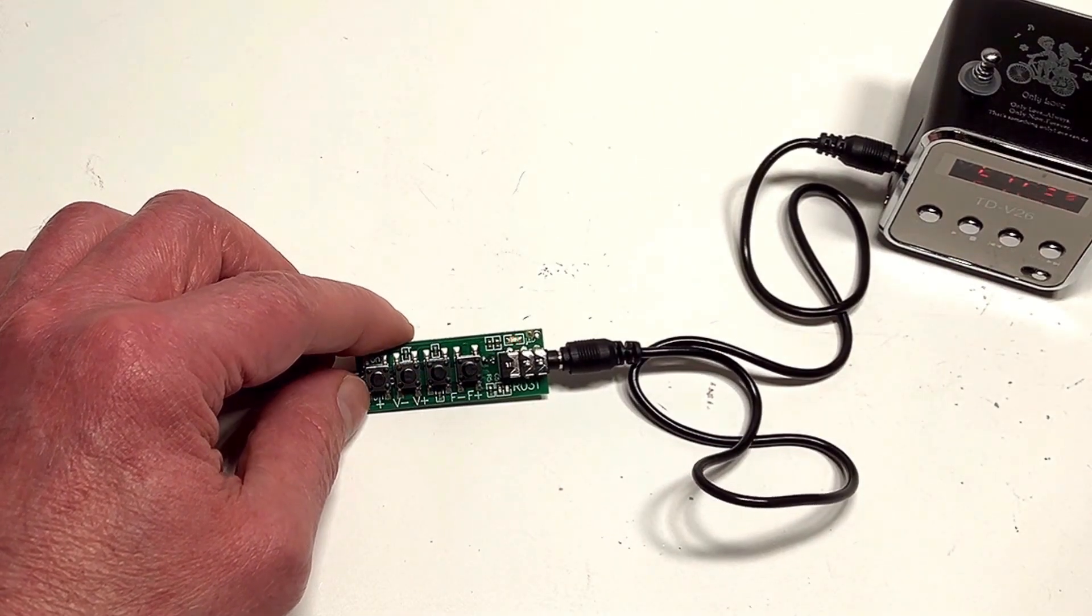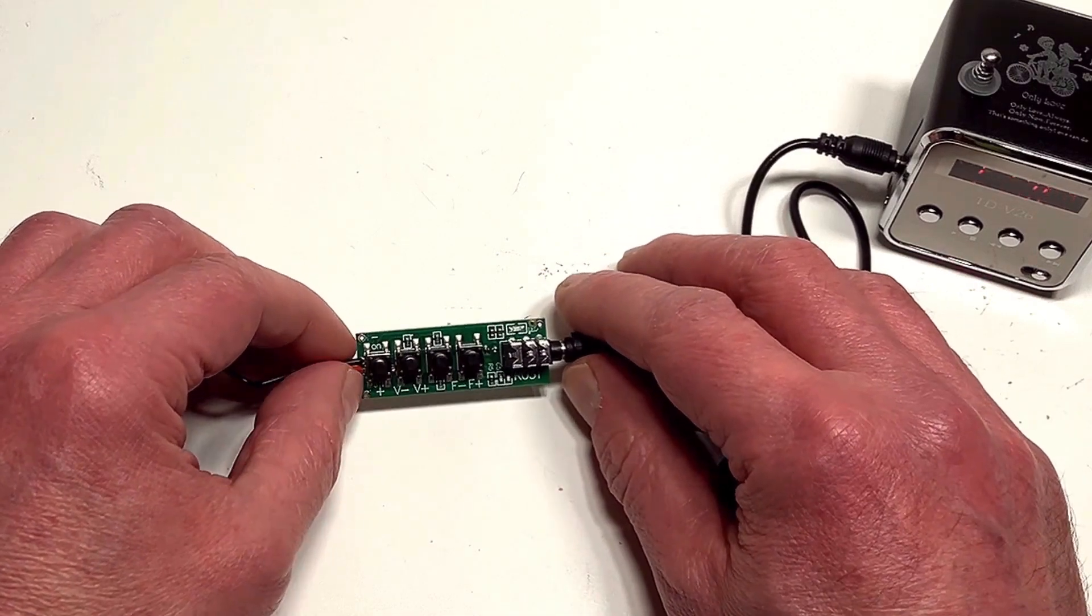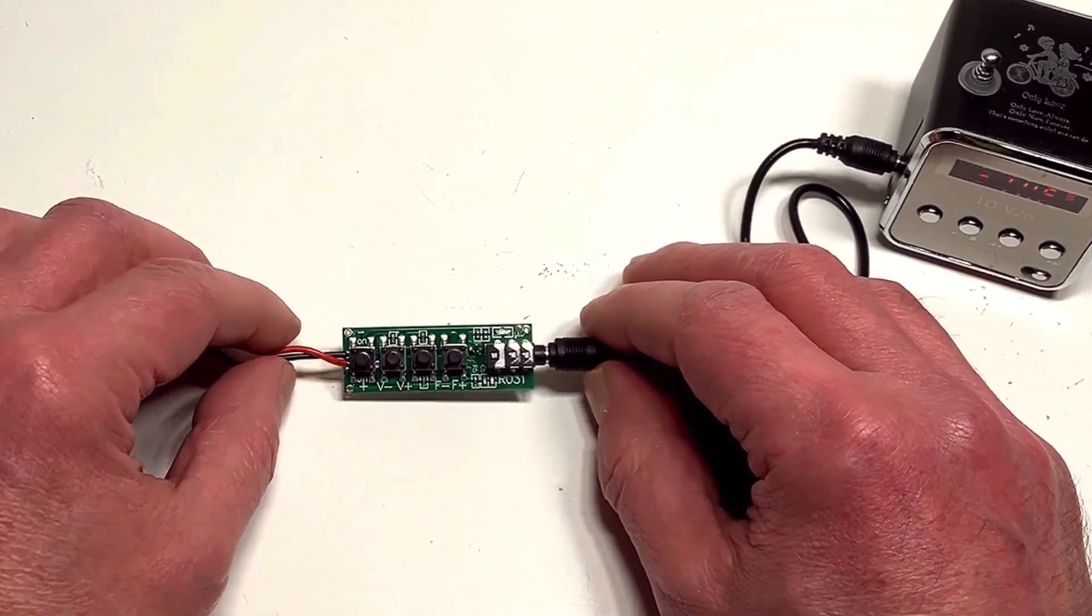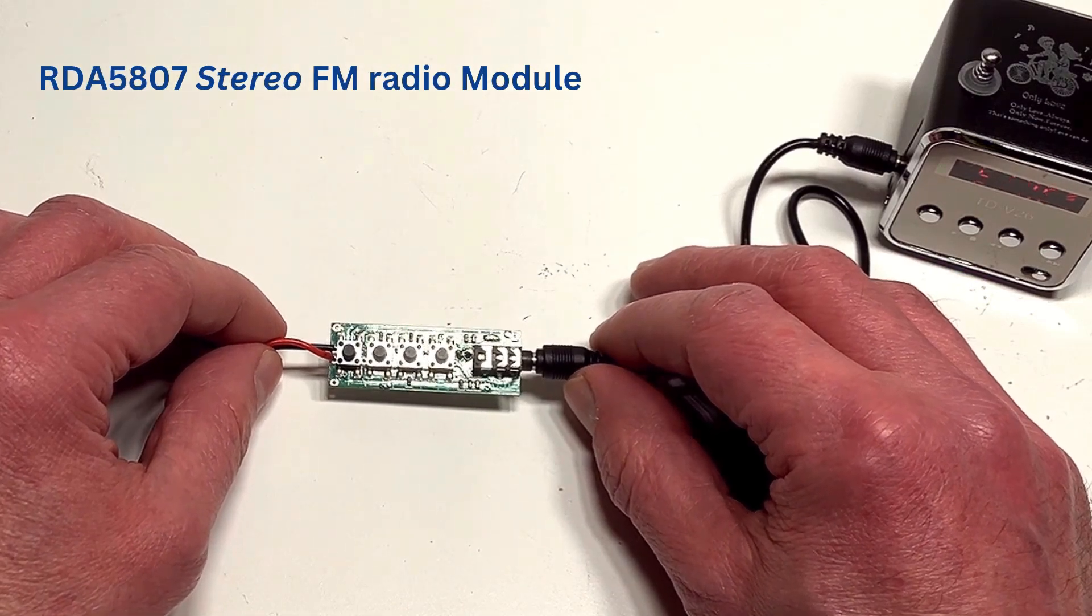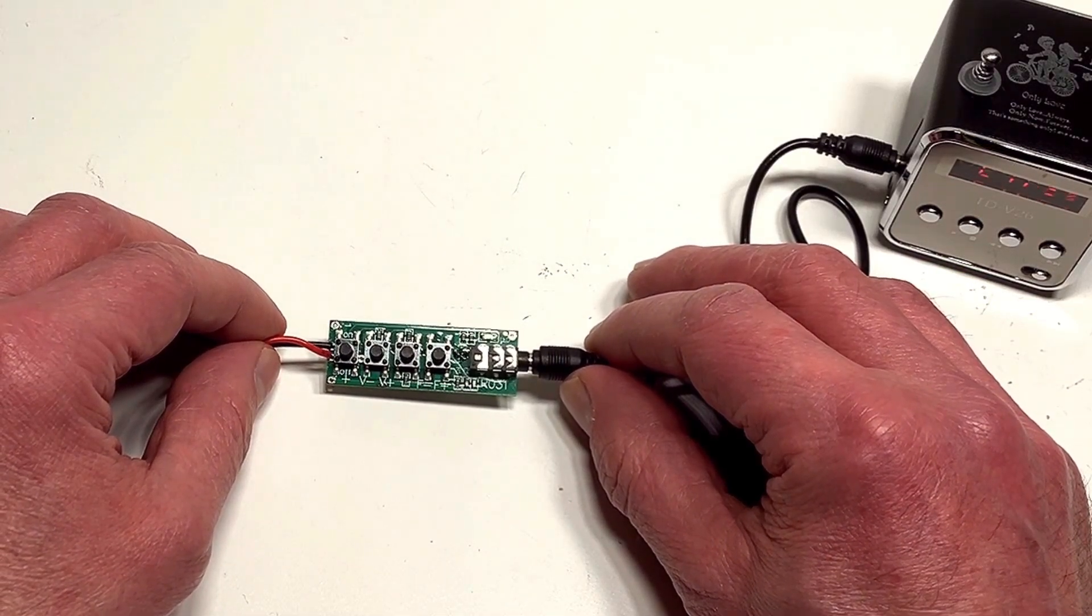I'll just turn that off. That actually picks up quite a number of stations. I'm really impressed with this. There you go. It's the RDA 5807 personal FM radio module from AliExpress.